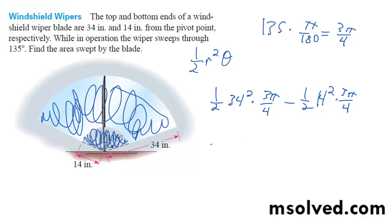And what we ultimately end up with here is 1,361.88 minus 230.907. And we end up with roughly 1,130.97 inches squared.